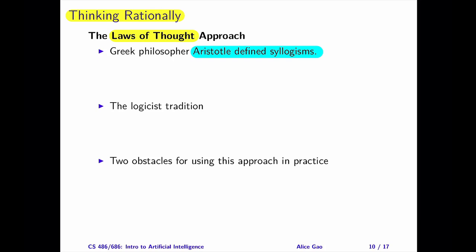Logic is a precise language that we can use to express statements. The development of logic led to the logistic tradition, which proposes using a logical system to describe and store all of our knowledge — the objects and their relationships. If the system has all of our knowledge, then theoretically it can solve any problem. Based on this belief, the primary goal in AI was to build such a system for a very long time.